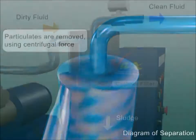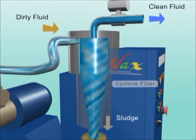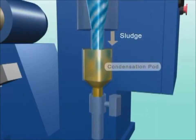The sludge that has been carried to the outer side is gradually precipitated downward due to gravity. The precipitated sludge is accumulated in the condensation pod.